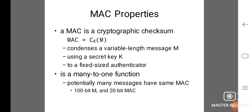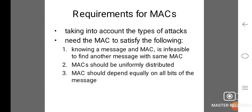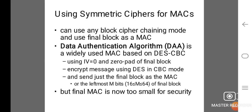A MAC is a cryptographic checksum: MAC = C_K(M). It condenses a variable-length message M using a secret key K to a fixed-sized authenticator. It is a many-to-one function — potentially many messages have the same MAC. For example, a 100-bit message M and a 20-bit MAC. Requirements for MACs: (1) knowing a message and MAC, it is infeasible to find another message with the same MAC; (2) the MAC should be uniformly distributed; (3) the MAC should depend equally on all bits of the message.